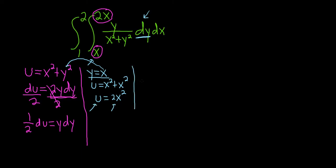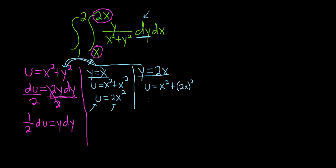Now we'll do the top limit of integration. When y equals 2x, taking 2x and plugging it in, we get u equals x squared plus (2x) squared. This gives us u equals x squared plus 4x squared, which is u equals 5x squared.